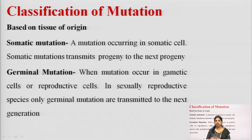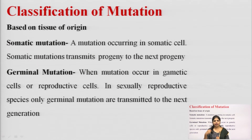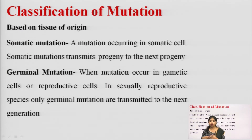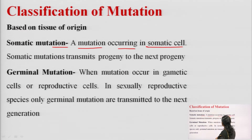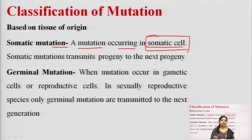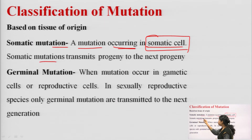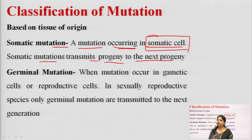Based on tissue of origin, mutations in the cells are known as somatic mutations or germinal mutations. Somatic mutation: if any kind of changes occur in somatic cells — cells other than reproductive or gamete cells — those are somatic mutations. Somatic mutations are not transmitted to the next generation in the same way.